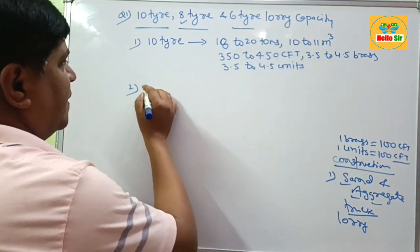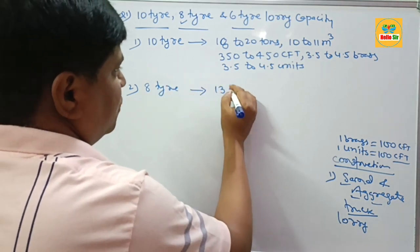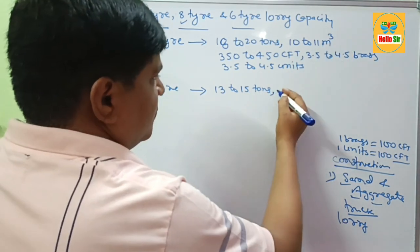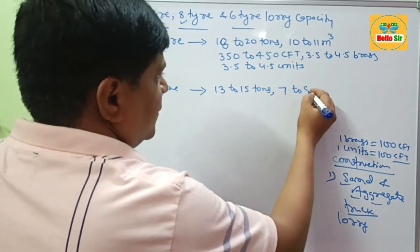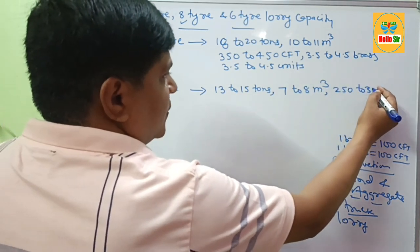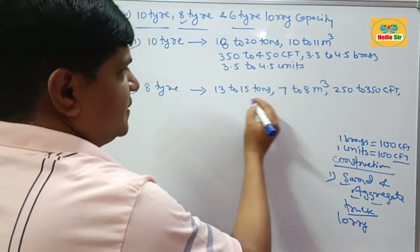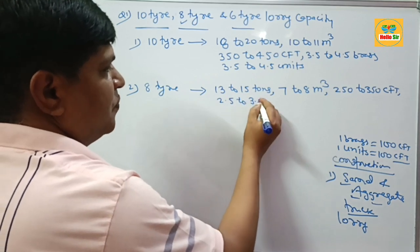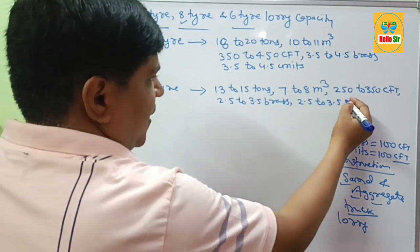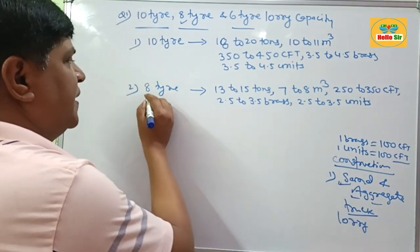The carrying capacity of an 8-tire truck is about 10 to 15 tons of material. If you convert this in cubic meters, it will be 7 to 8 cubic meters. And in CFT, it is about 250 to 350 cubic feet. In brass and other units, it can be 2.5 to 3.5 — that is, 2.5 to 3.5 units of material such as sand and aggregate can be hauled by an 8-tire truck.